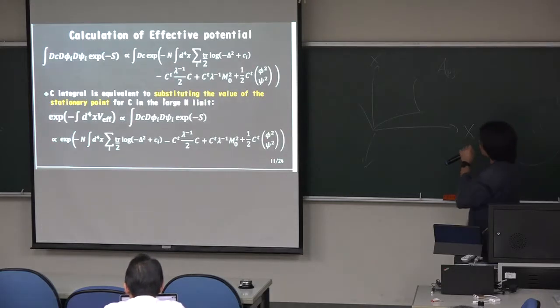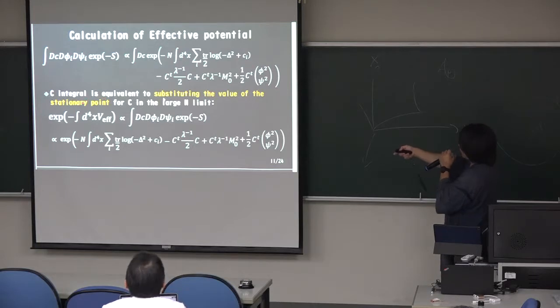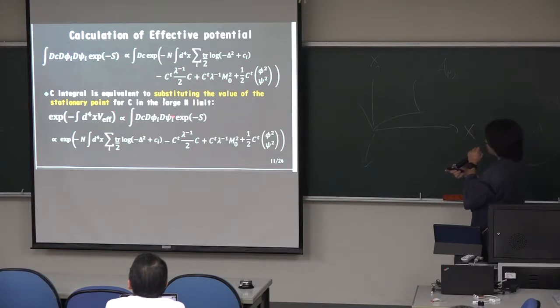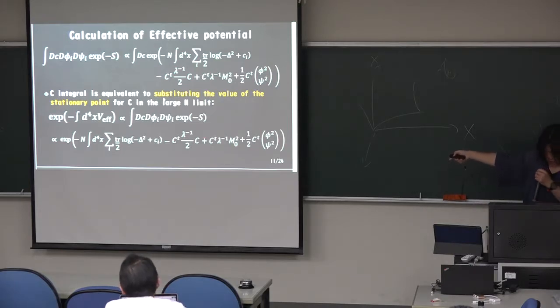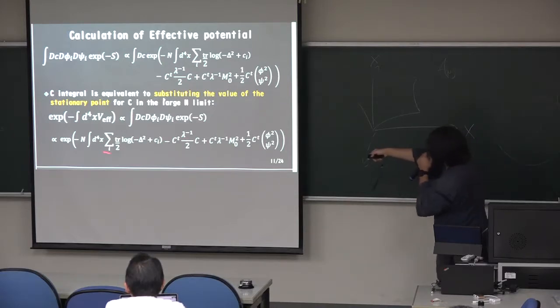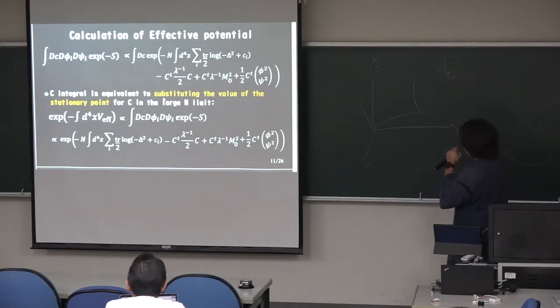And we also, we have the C integral. C integral, Oxy integral. But we are considering a larger limit here. So C integral is equivalent to the substitute in the value of the stationary point. For C, it's a larger limit. This is the same in the classical limit. So this pass integral of electric potential cross into this. And this becomes like this. So a little complicated.